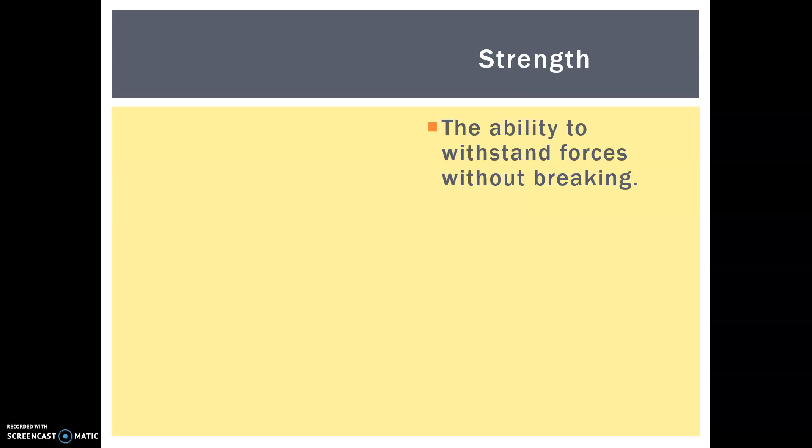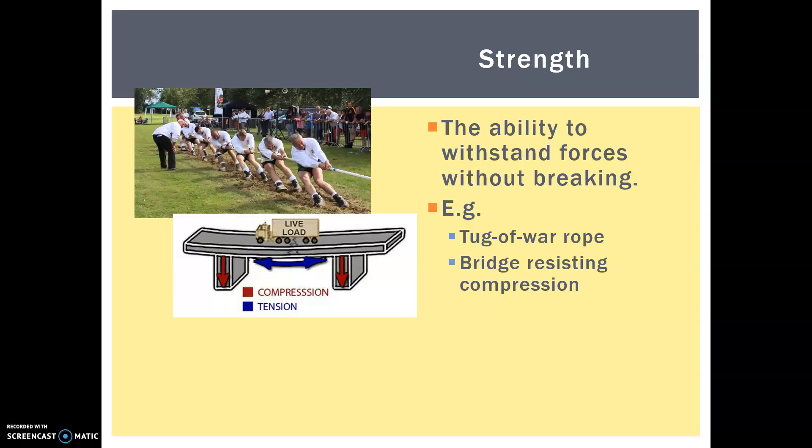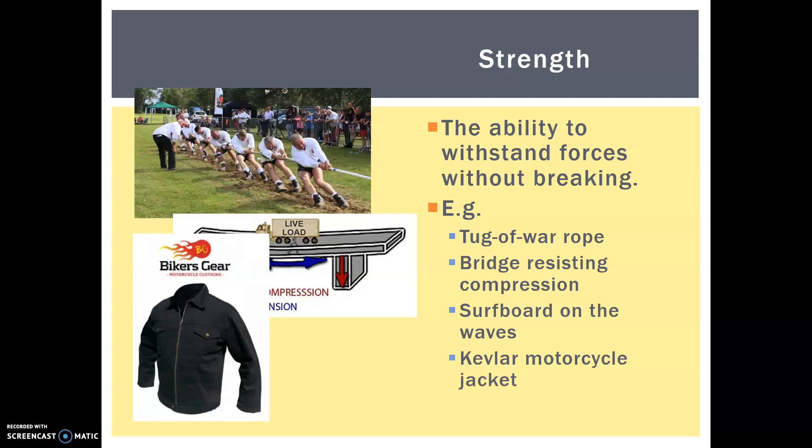Next we have strength. That's the ability to withstand forces without breaking. So for instance, tug-of-war ropes. If you pull on both ends, it shouldn't snap because it's very strong. Bridges resisting compression, we have all sorts of forces being applied. That needs to be very strong to allow trucks to move over it. Surfboards on the wave. Kevlar motorcycle jackets are also very strong.